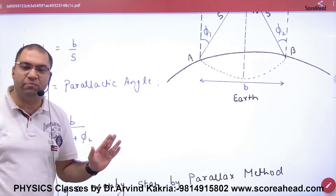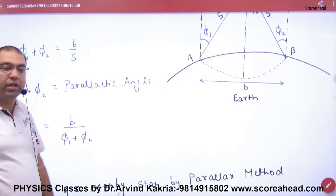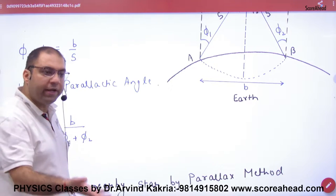So this is how we calculate the distance to the Moon using the parallax method. The distance S is obtained from S = B / (φ1 + φ2).